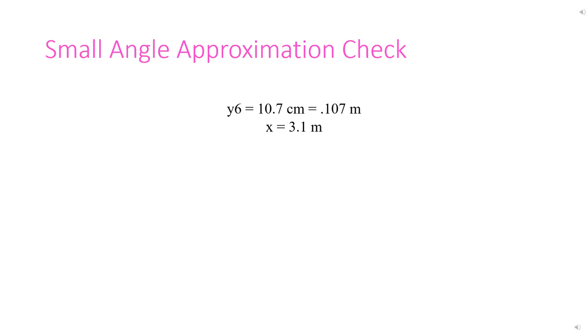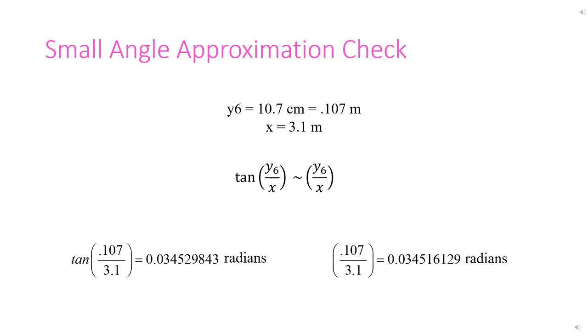Now for a little bonus content. As mentioned earlier, these calculations are possible because of small angle approximation. Another way to double check the validity of this is to use another order distance. Since we just calculated y6, we can use that as the example. If the calculations are correct, tangent of y6 divided by x should be approximately the same as y6 divided by x, both in radians. Always remember to keep the units the same throughout the calculations. As you can see, those two numbers are approximately equal, and rounding to three significant figures, they are equal.